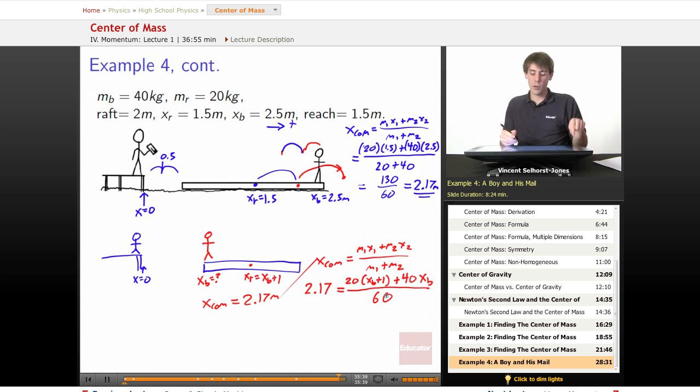So we multiply 2.17 by 60. We get that 130 we started up with over there. We get 20xb plus 20 plus 40xb. We get 110 because we subtract 20 from each side equals 60xb.